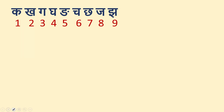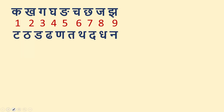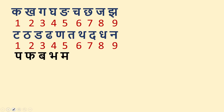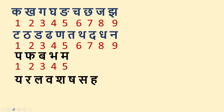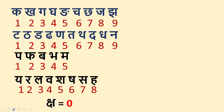Taadi Nava — from Ta, take 9 alphabets: Ta, Tha, Da, Dha, Na, Ta, Tha, Da, Dha, Na. And Paadi Panchaka — from Pa, take 5 letters: Pa, Pha, Ba, Bha, Ma. And Yadyastakam — from Ya, take 8 letters. And Ksha is called Kshudram, that is 0. That's all.